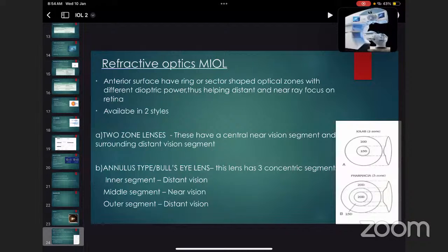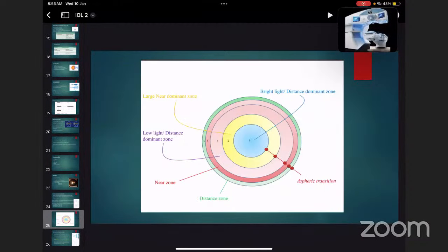Refractive optics multifocal IOL: anterior surface have ring or sector-shaped optical zones with different dioptric power, thus helping distance and near rays focus on the retina. Available in two styles. First image shows two-zone lenses which have a central near-vision segment and distance surrounding region segment, also known as bifocal. Second is annular type: this lens has three concentric segments - inner segment is distance, middle segment is near-vision, and outer segment is distance-vision.